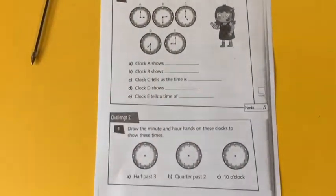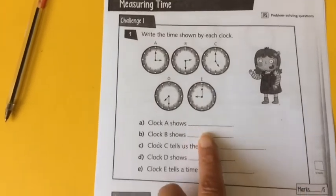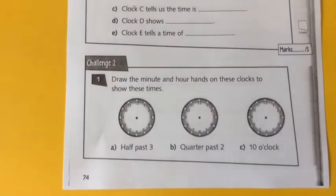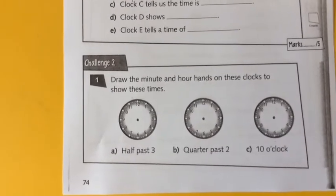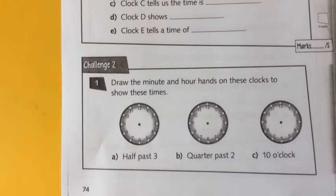Have a go at this then. Page 74. And here, I want you to write the digital time for me. And then here with your rulers, which you should be good at using by now, you've got to put the hands on.